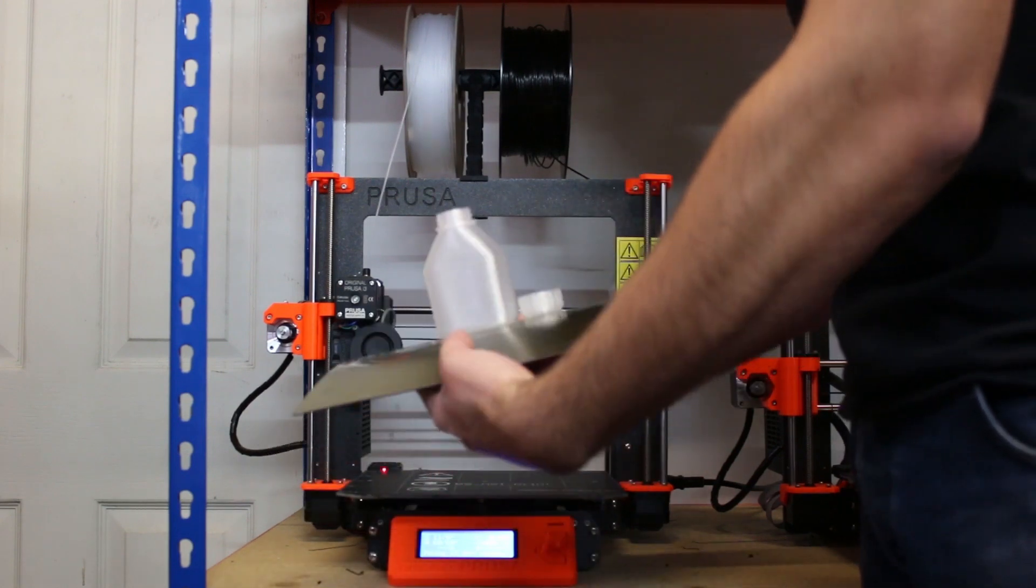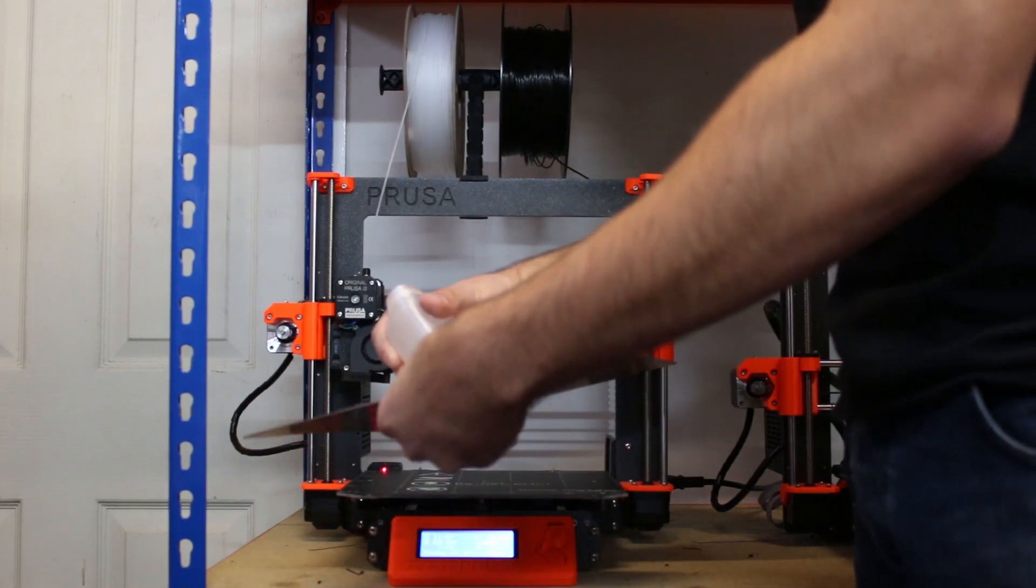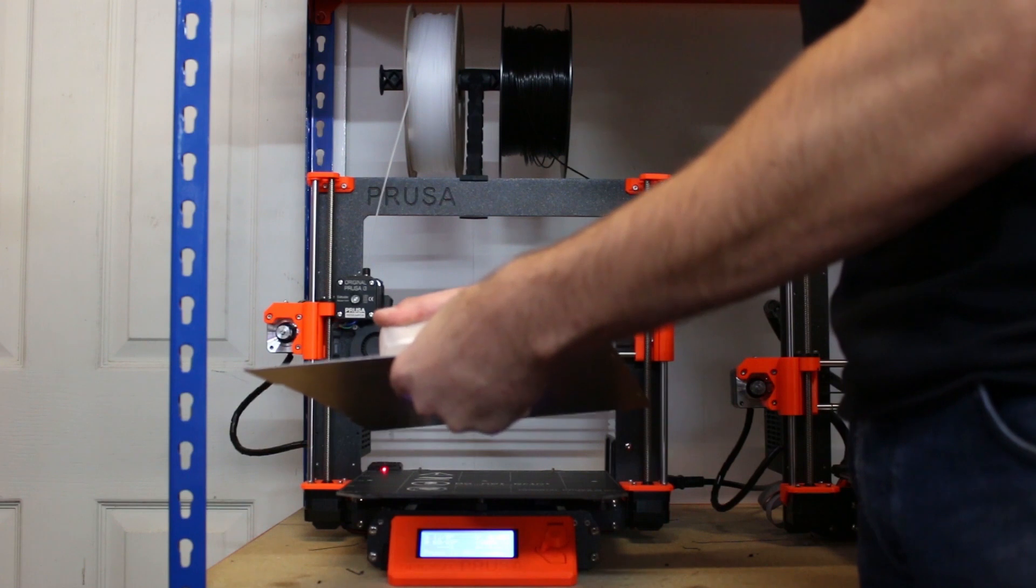Remove the flex plate from the printer and flex to remove the model. You may need to preheat the flex plate to help with removal.